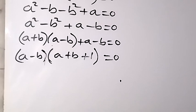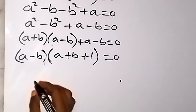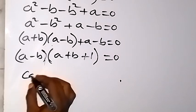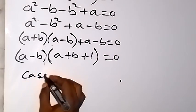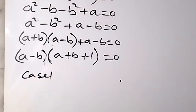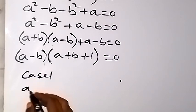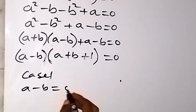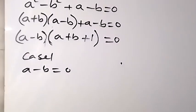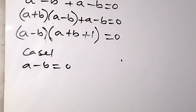Since two numbers multiply to give zero, we have two cases. For case 1, a minus b equals 0.